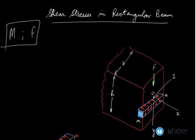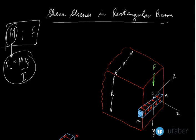The stress due to bending moment M is the bending stress sigma_B, which can be calculated with the simple flexural formula, where M is the bending moment, I is the moment of inertia, and Y is the distance of the fiber from the neutral axis.